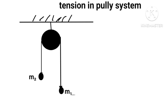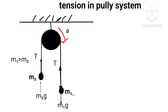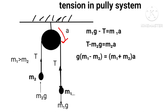Let us consider a frictionless pulley hanging on a roof where masses m1 and m2 are on the two ends of a string such that m1 > m2. Weight m1g is pulled down by gravitational force, resulting in tension T in the string against m1g. On the other side, weight m2g is pulled up due to an equal and opposite tension T. With acceleration a: m1g − T = m1a, and T − m2g = m2a. Adding both equations: g(m1 − m2) = (m1 + m2)a.